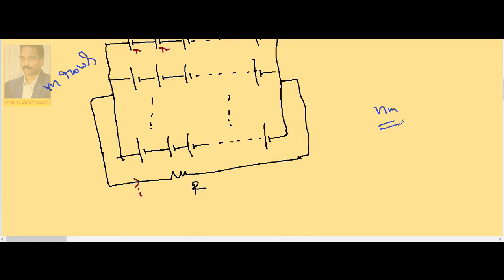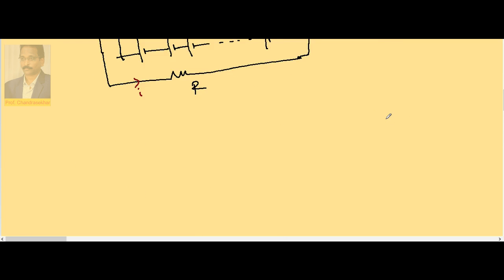Now what is the current through this circuit? What is the value of I? Already we know this equation: total EMF divided by total resistance, n by m into small r. I is maximum when capital R is equal to n by m into small r.